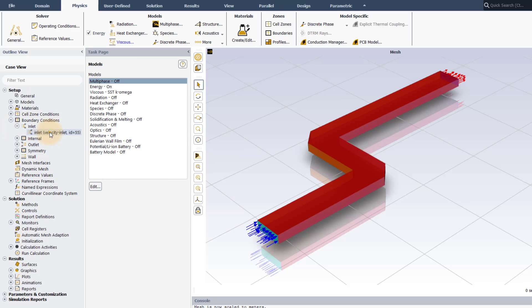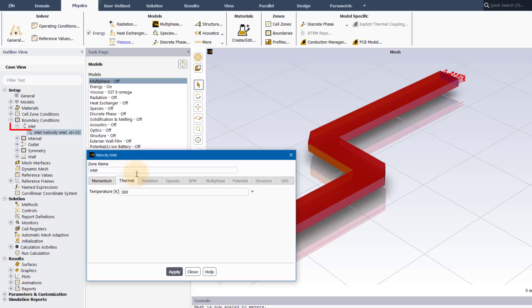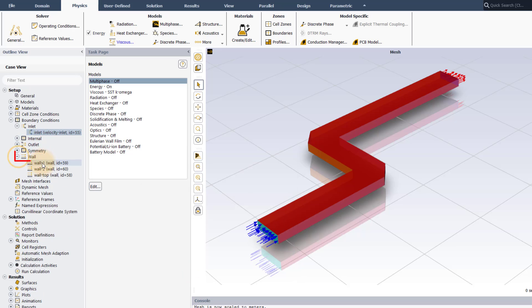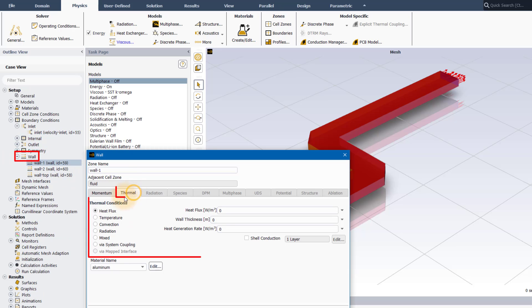Then define your thermal boundary conditions for inlets and walls using the thermal tab of the relevant boundary condition panel. These steps will be shown in more detail in following lessons about materials and boundary conditions.